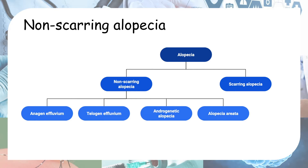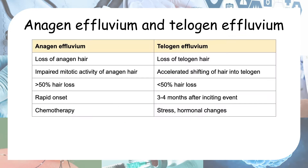We'll first talk about anagen effluvium and telogen effluvium, as both involve shedding of hair in different hair cycle phases. Anagen effluvium is the shedding of hair in the anagen phase, whereas telogen effluvium is the shedding of hair in the telogen phase. Anagen effluvium involves impaired mitotic activity of anagen hair, usually caused by chemotherapy.